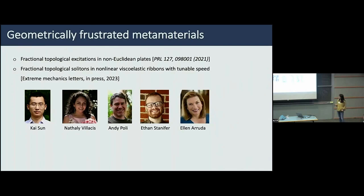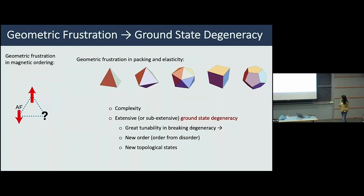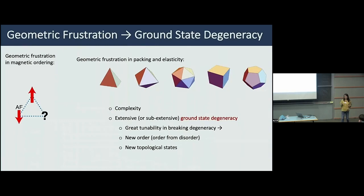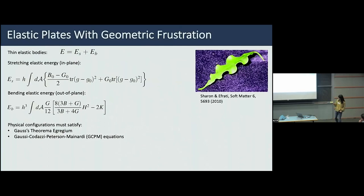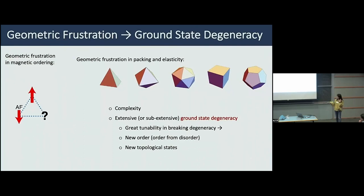Frustrated magnetism has been studied for a long time in condensed matter physics. One key lesson is that when you put frustration in a condensed matter system, you typically get a lot of ground states — extensive or sub-extensive degeneracy. This degeneracy gives very interesting physics because the system becomes very sensitive: a small perturbation can break the degeneracy and give rise to all kinds of interesting order and new topological states. We are interested in controlling and creating degenerate ground states and studying what dynamics they give us.